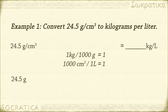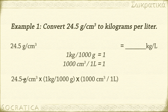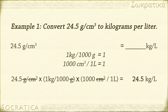Which way do we write these conversion factors so the units cancel in our problem? 24.5 grams per centimeters cubed times 1 kilogram over 1,000 grams — grams has to go on the bottom to cancel. Then times 1,000 centimeters cubed over 1 liter — centimeters cubed has to go on the top. Check to make sure all your units cancel and you'll be left with kilograms per liter. Multiply all the way across on the top and all the way across on the bottom. The answer is 24.5 kilograms per liter.